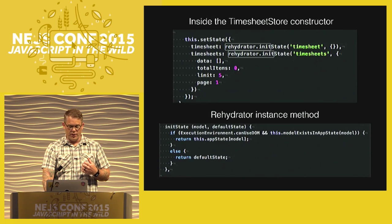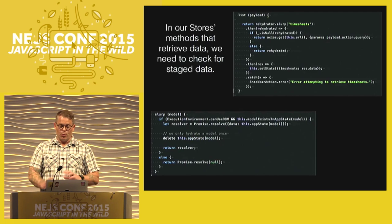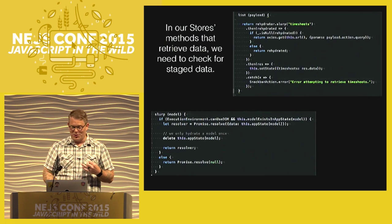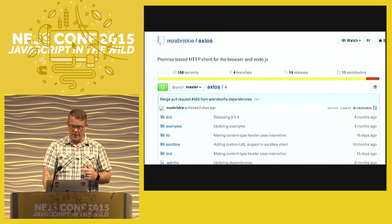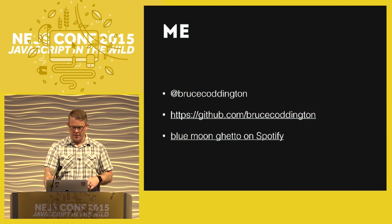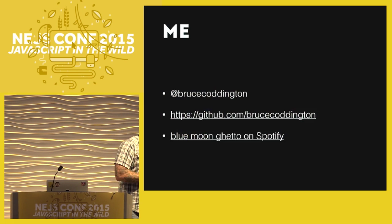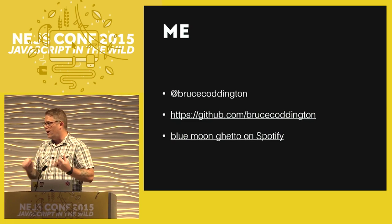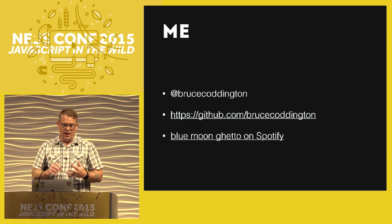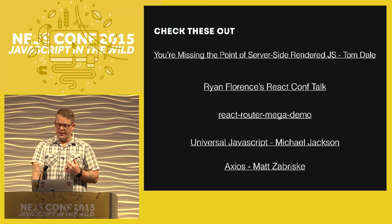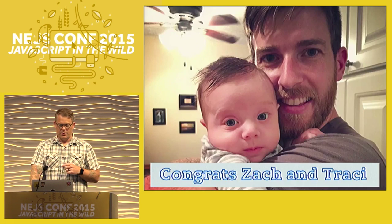The store functions: if the data has been rehydrated, use it; otherwise return a promise of null. Axios is a cool library I used for HTTP calls. And that's really it in a nutshell. You can follow me on Twitter at Bruce Coddington. All the code is on GitHub. I also play in a band called Blue Moon Ghetto, we're on Spotify. The slides will be on SlideShare. Check out the links, and congrats Zach.